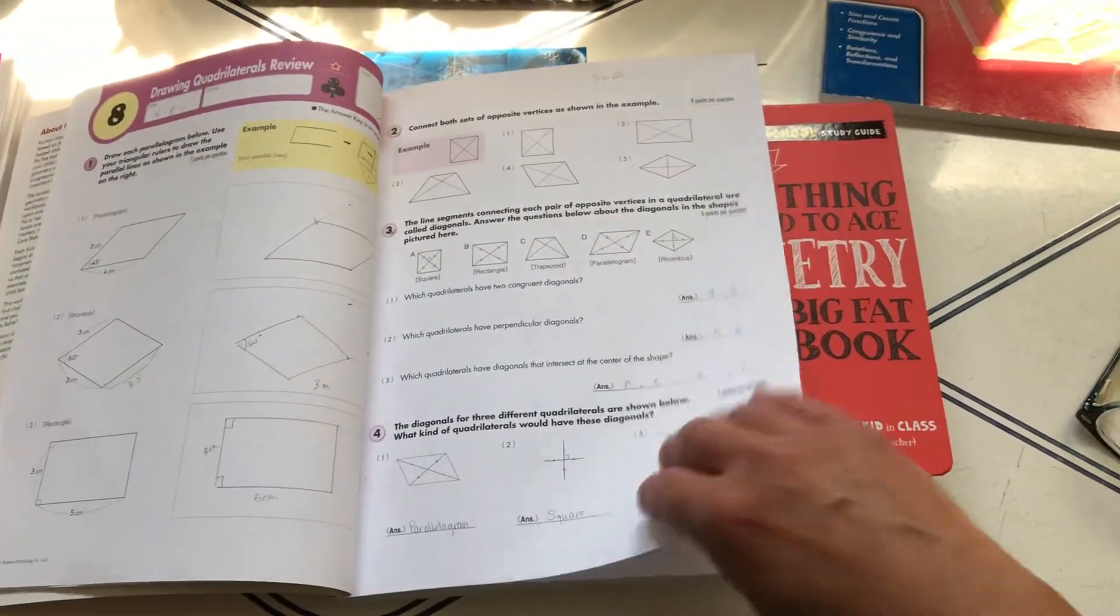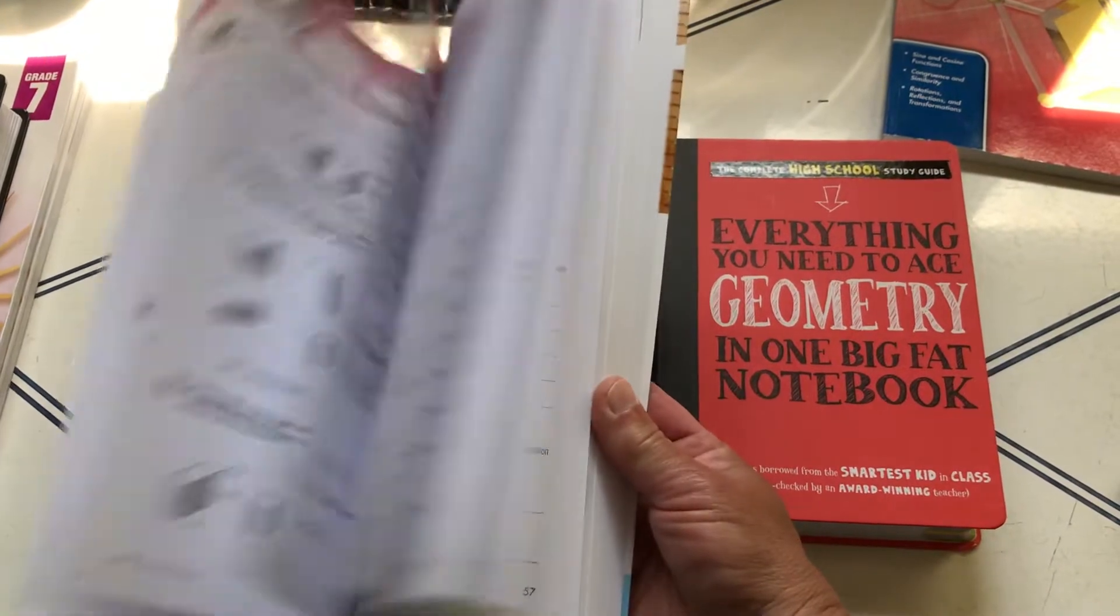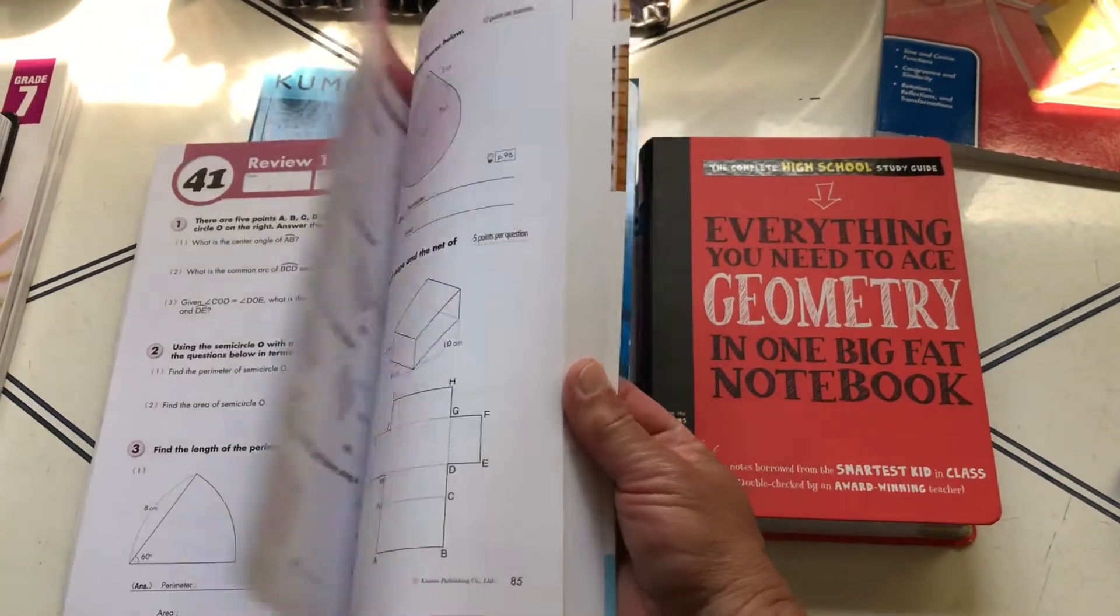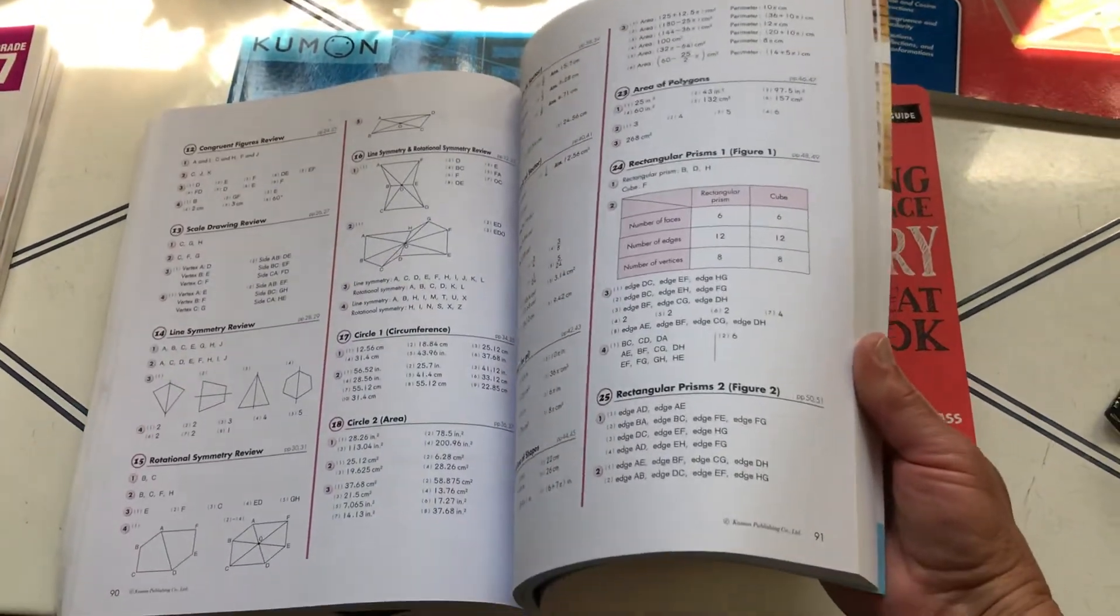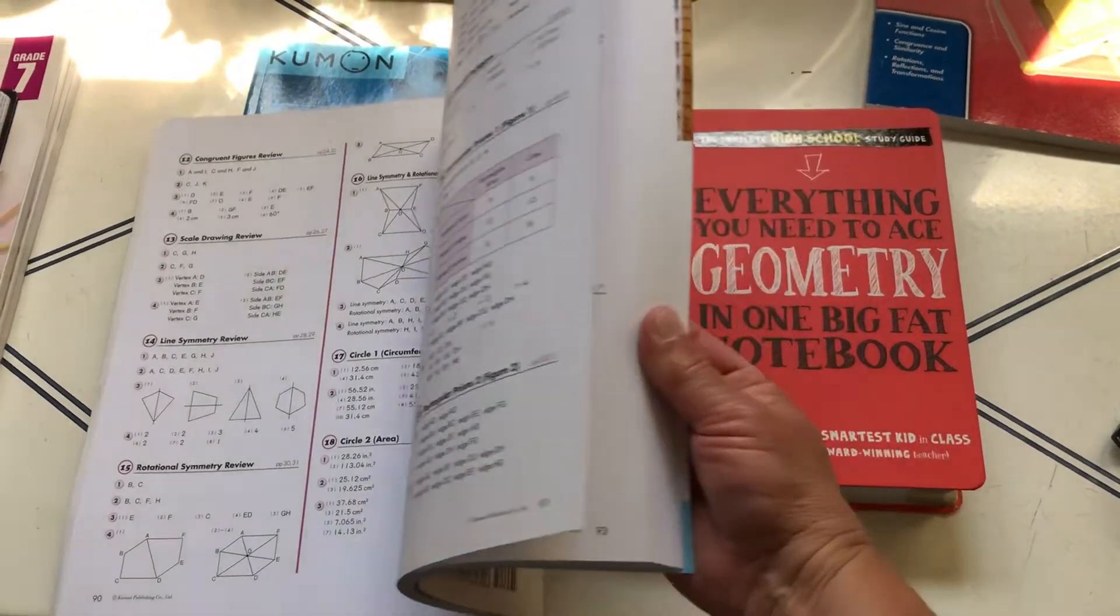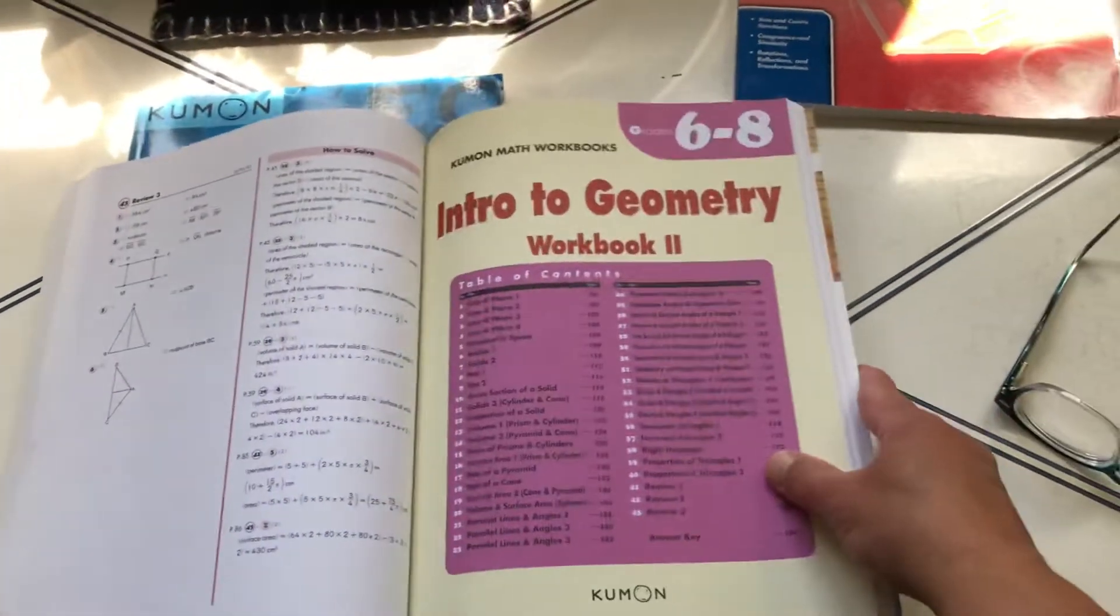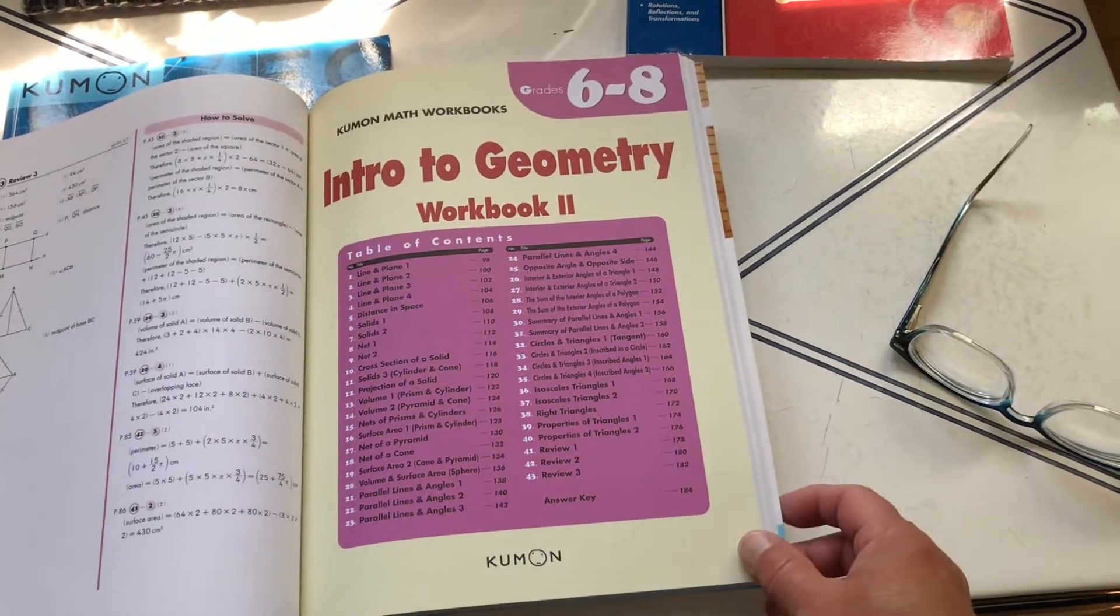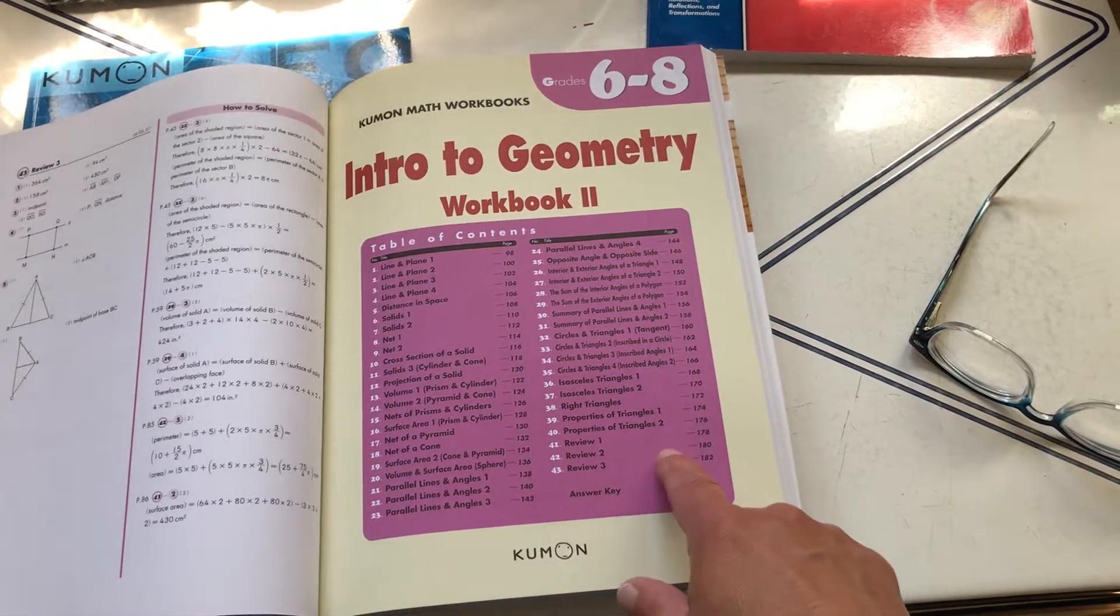Like here's seven, then you go to eight, and then in the middle of the book you get to forty, forty-one. Here's your answer section to the first workbook. And then look at this, a whole second workbook.